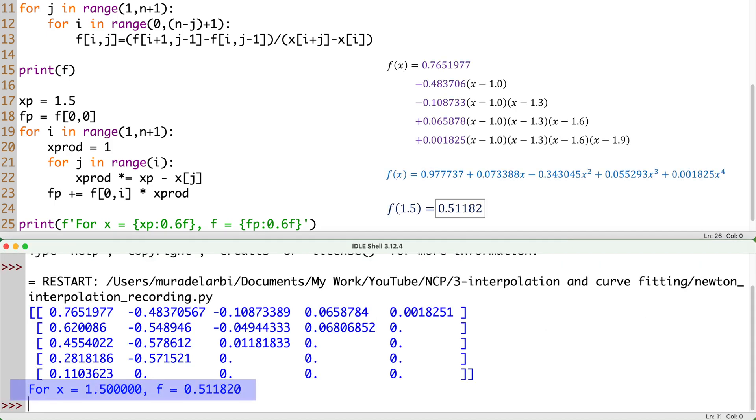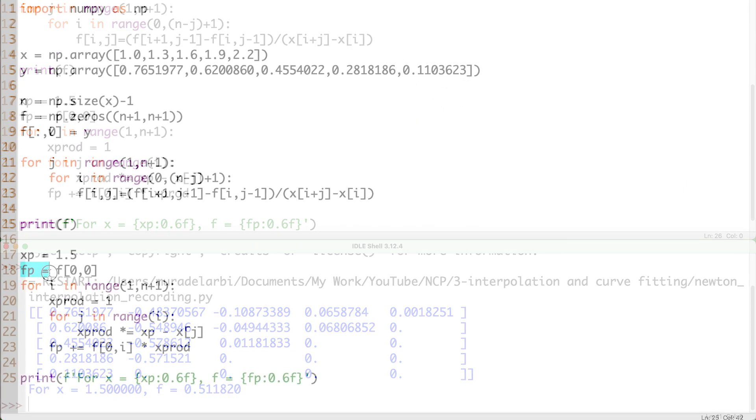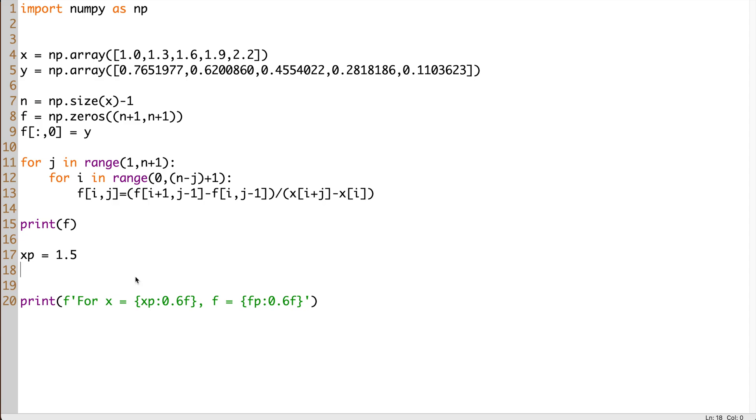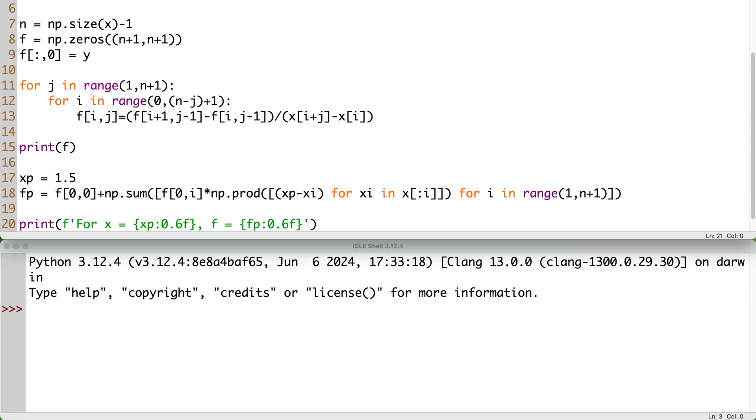Now, before plotting the polynomial, let's rewrite the substitution loop by using the inline for loops. And you will see how we will reduce the size of the code from multiple lines to only one line. Here, instead of summation and product by using increment assignment signs, we use NumPy's sum and prod or product functions. And we control their arguments by using two inline for loops. Let's check the result.